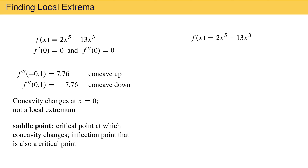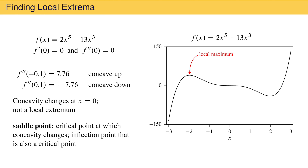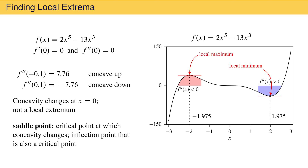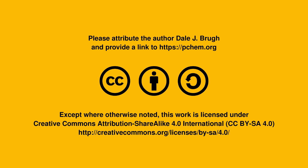We can summarize our work with this function on its plot. There is a local maximum at negative 1.975 because the first derivative at that point is zero and because the function is concave down in that region. There is a local minimum at 1.975 because the first derivative there is zero and because the function is concave up on both sides of this critical point. A saddle point exists at x equal to zero because the first derivative is zero at that point and because the second derivative changes from positive on the left of zero to negative on the right of zero. And that's Maxima and Minima.